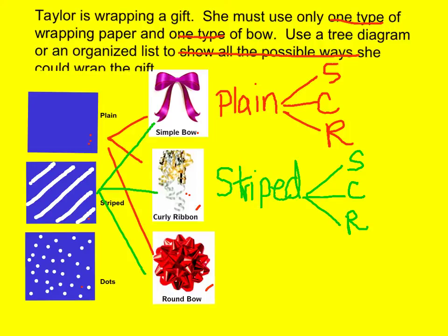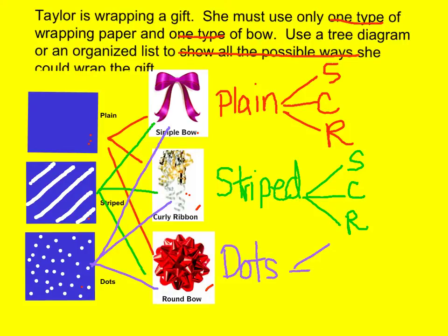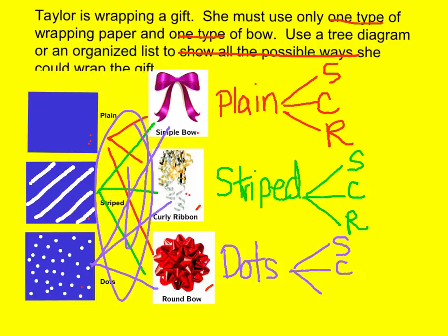Then I'm going to go to my dotted. Let's go with purple for this one. For my dotted, I could do the simple bow, I could do the curly ribbon, or I could do the round bow. You don't have to draw all these lines in here — that can get kind of messy. I just did that so you could follow what I was doing.